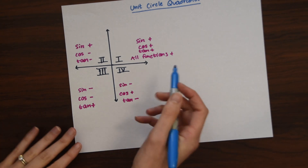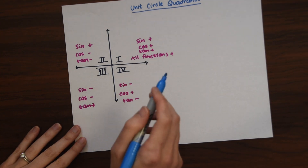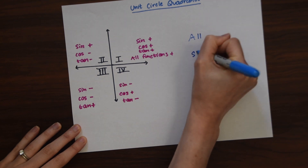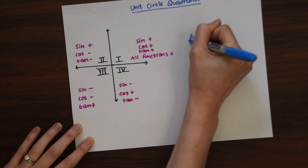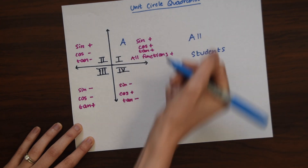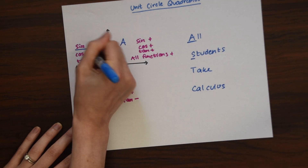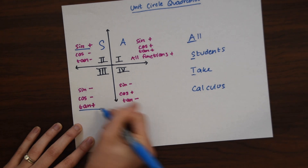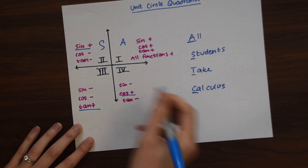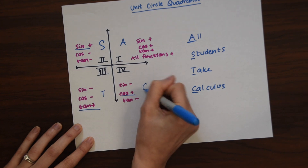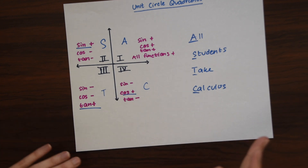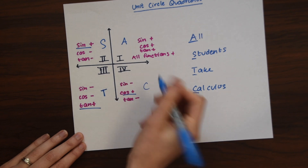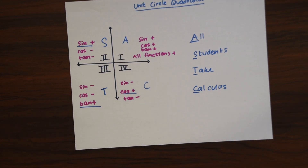So how are you supposed to remember this? A little trick is the acronym ALL STUDENTS TAKE CALCULUS. A is for all, S is for sine, T is for tan, and C is for cosine. This is a nice way to remember which trig function is positive in which quadrant — using ASTC as part of your unit circle is important when you answer these kinds of questions.